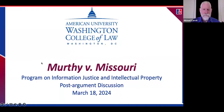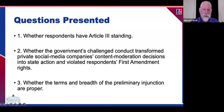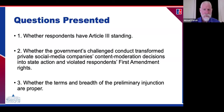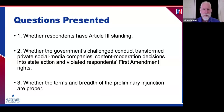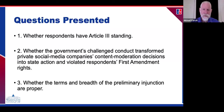There are really three questions presented: whether respondents have Article Three standing; whether the government's challenged conduct transformed private social media decisions into violations of First Amendment rights because they amounted to state action; and whether the terms and breadth of the preliminary injunction as modified by the Fifth Circuit Court of Appeals is proper. Article Three standing requires a concrete injury that's traceable to the alleged wrong and redressable by the court.